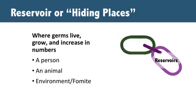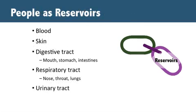Reservoirs are places where germs hang out, grow, and increase in numbers. These can be a person, animal, or environmental surface, like a bed rail or BP cuff. In people, germs can hang out on people's skin, in the digestive tract like the mouth, stomach, or intestines, and in the respiratory tract like the nose or throat.